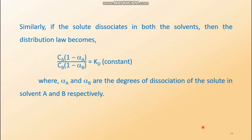Similarly, if the solute dissociates in both solvents, there are two degrees of dissociation: alpha_A and alpha_B. A portion alpha_A dissociates within solvent A and alpha_B dissociates within solvent B. The undissociated concentrations are CA(1 - alpha_A) and CB(1 - alpha_B) for solvents A and B respectively. The distribution coefficient Kd is then CA(1 - alpha_A) / [CB(1 - alpha_B)]. This is the expression for situation two.